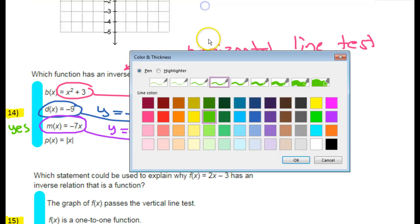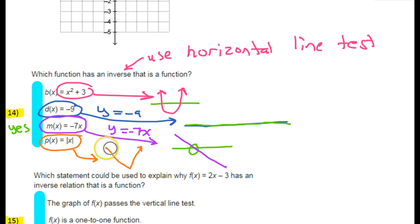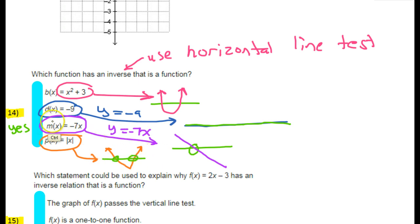The very last one obviously has to be a no since we already found our yes. This is the absolute value function, which forms a V shape. This fails the horizontal line test because a horizontal line hits it more than once. So the third one — y equals negative 7x — is the only one that passes the horizontal line test, meaning its inverse is a function.